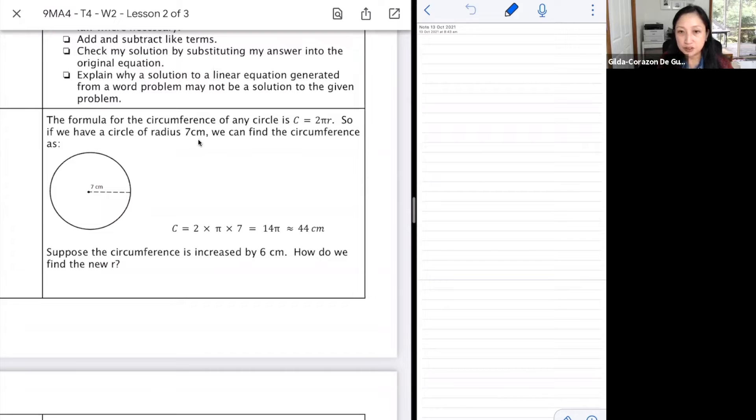So if we have a circle of radius 7 centimeters, we can find the circumference by replacing the given radius, which is 7. So we go 2 times π times 7, which is 2 times 7 is 14, 14π. So this is in terms of π, and this is in terms of an approximated value to the nearest centimeter.